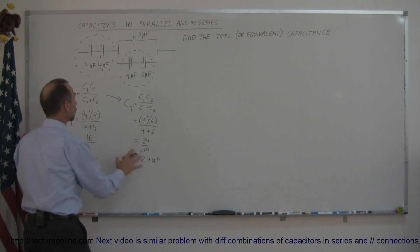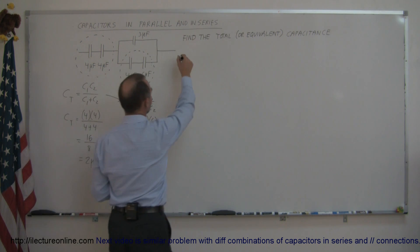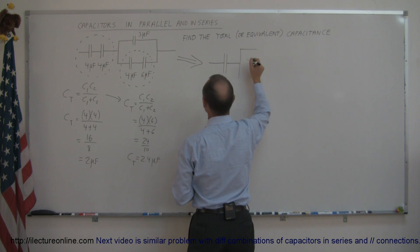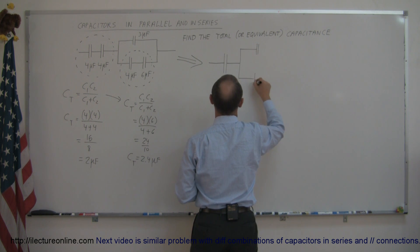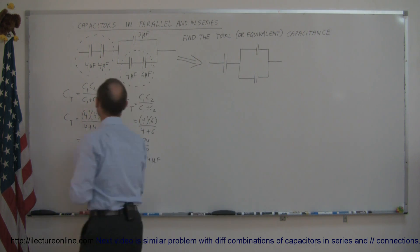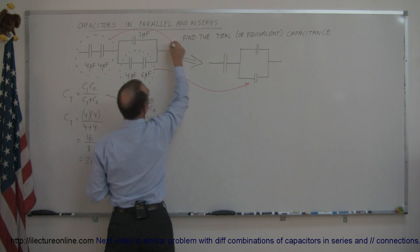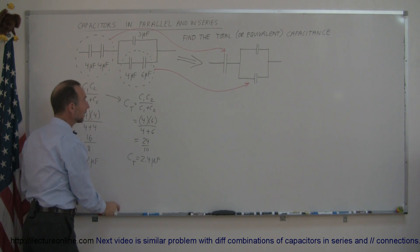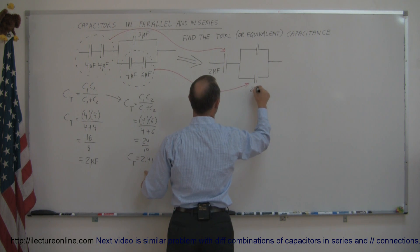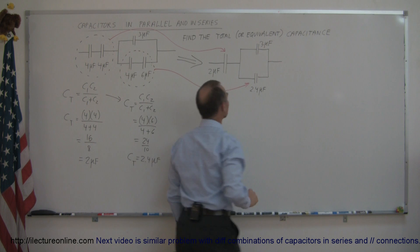Now we redraw the circuit, replacing each series pair with a single capacitor. The redrawn circuit has a single capacitor from the first pair, and a parallel branch containing the 3-microfarad capacitor and the equivalent capacitance of the second pair. The first pair is now a 2-microfarad capacitor, the second pair becomes a 2.4-microfarad capacitor, and the 3-microfarad capacitor remains unchanged.